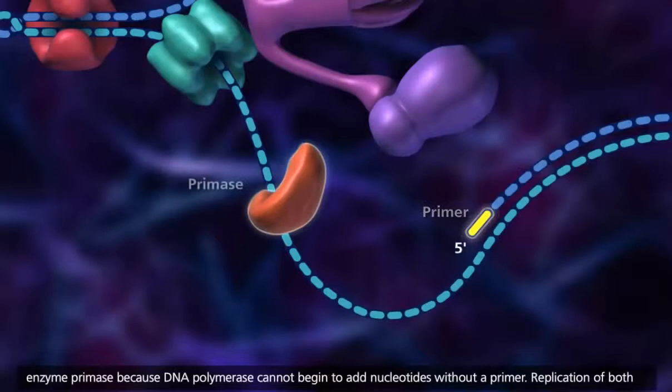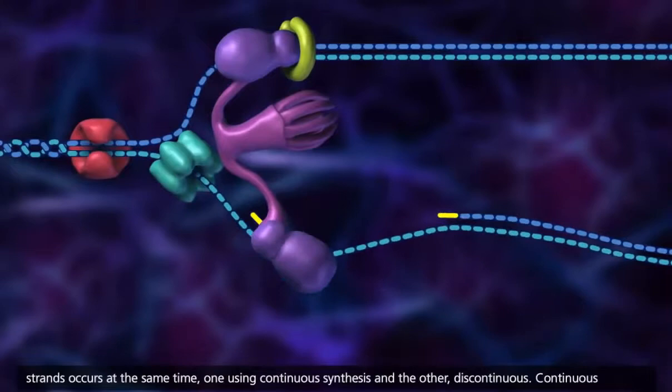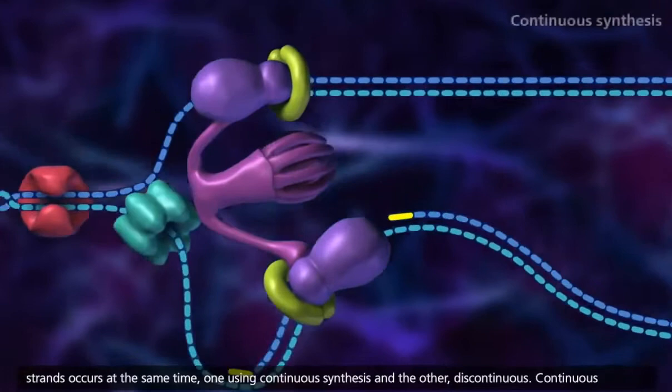Replication of both strands occurs at the same time, one using continuous synthesis and the other discontinuous. Continuous synthesis occurs on the 3' to 5' oriented parent strand, referred to as the leading strand.